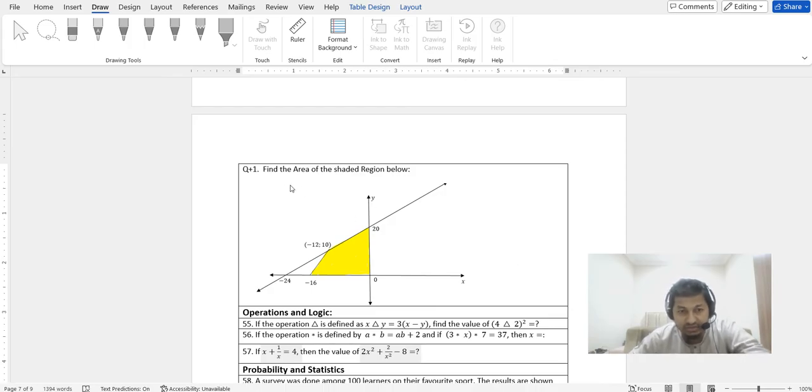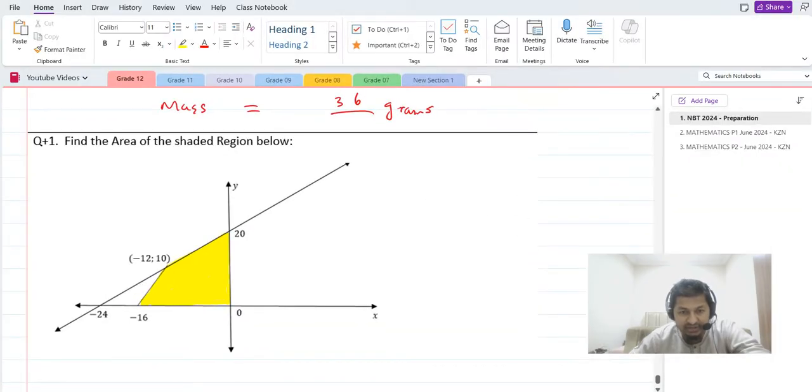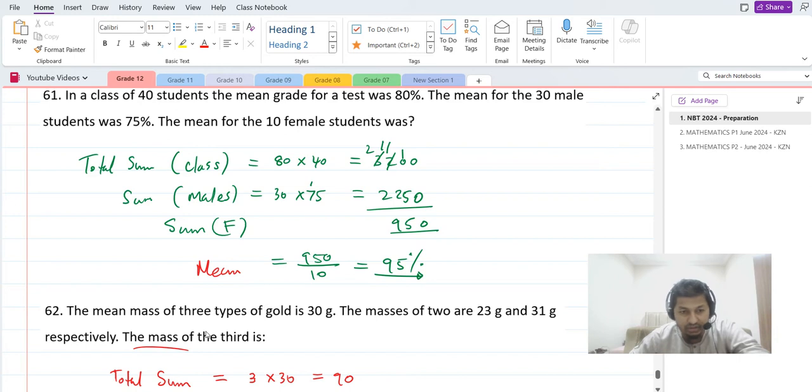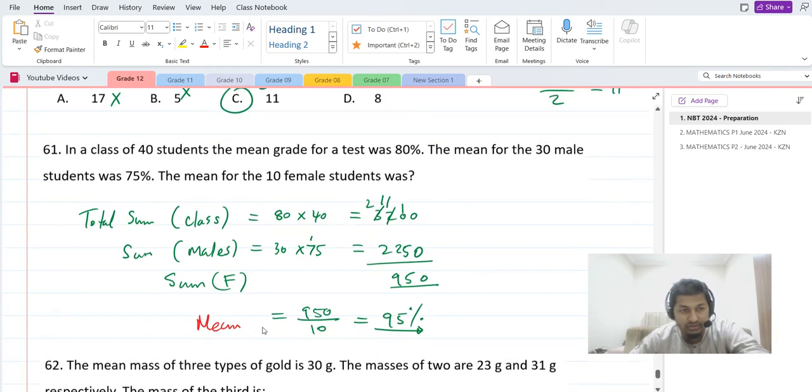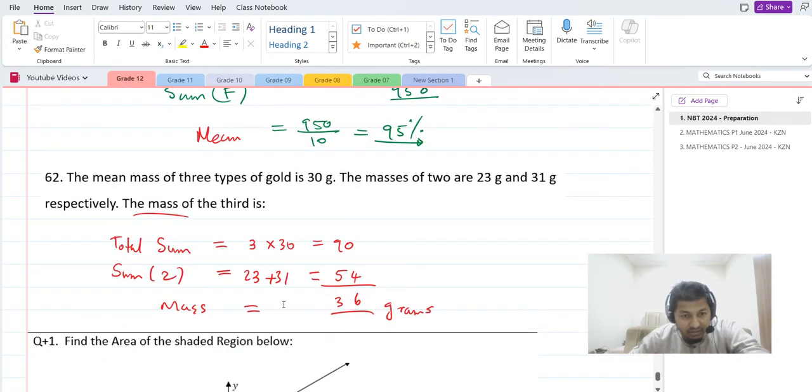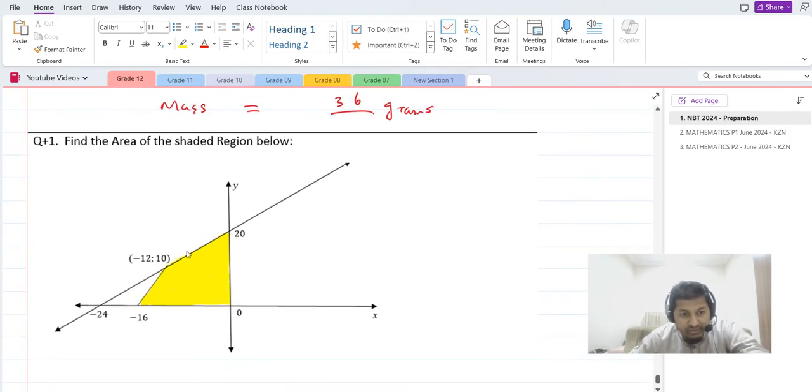The question says find the area of the shaded region below, so I will do it in my file. Make sure to check out the three hour video, the full course on my NBT. It's on my YouTube channel, you can check that out. This is additional question number one.